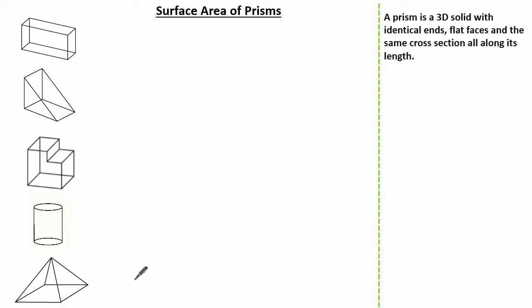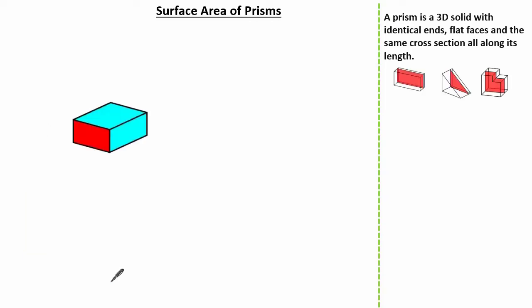What about a pyramid? A pyramid has flat faces but it does not have the same cross-sectional area as we go along, so therefore a pyramid is not a prism. Now we know what a prism is. Let's look at the key words for surface area. Surface area is the total area of all our faces, so it's important to visualise the prism.